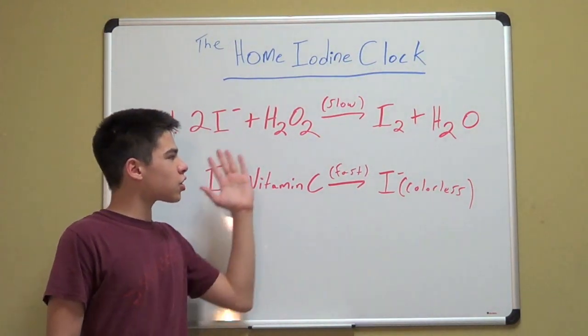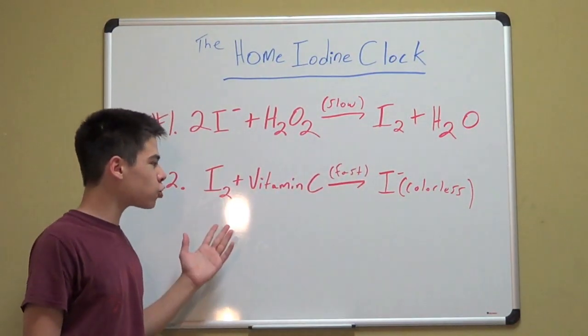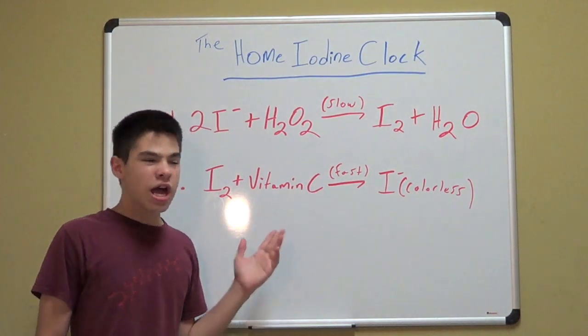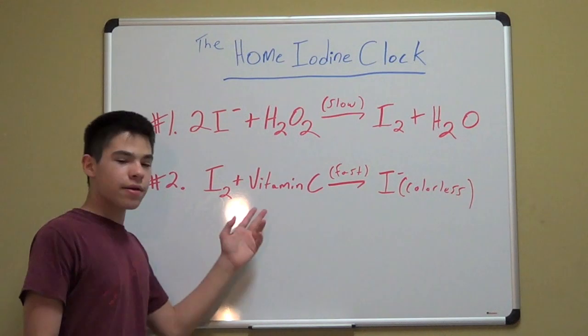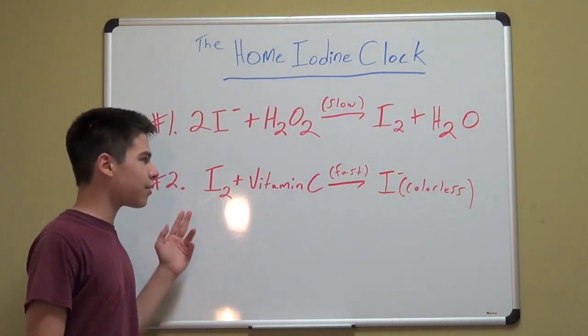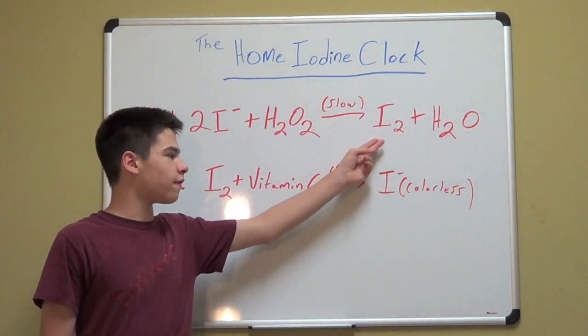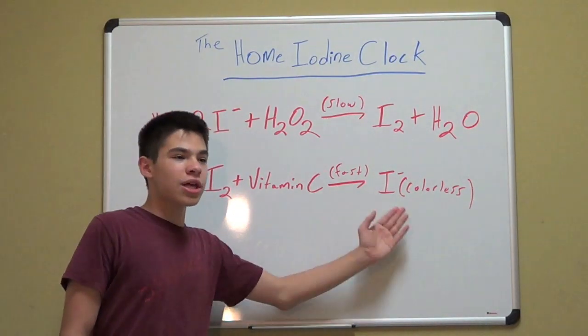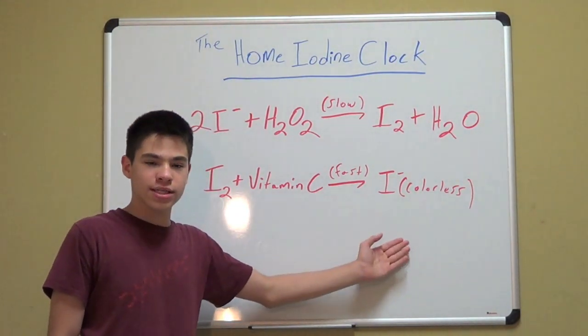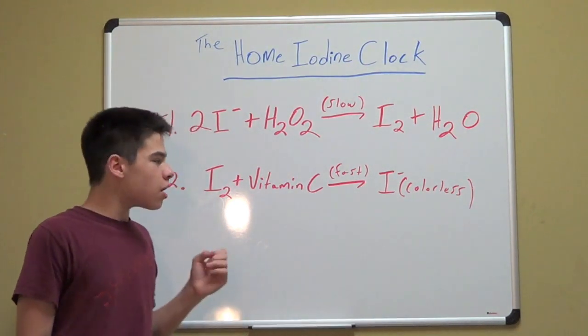This reaction is occurring very slowly, and unfortunately, there is a second reaction that is trying to reverse the steps of the first reaction. And that is, the vitamin C is reacting with the elemental iodine formed in the first reaction, and reducing it back to the iodine ion, which is colorless in the presence of starch.